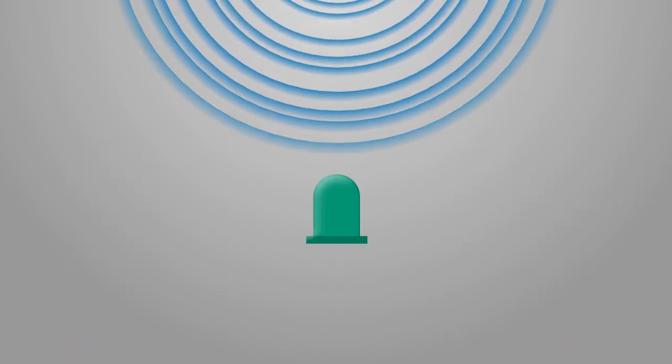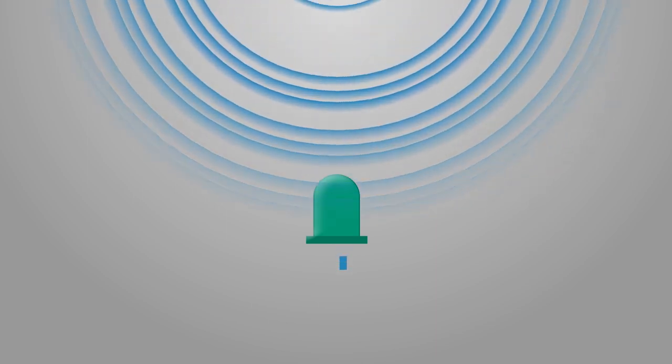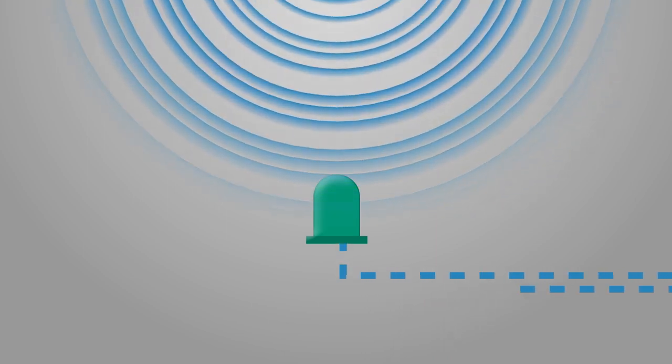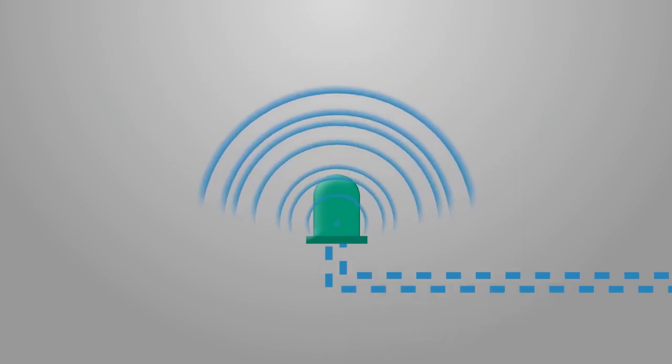A photodiode on the receiver device captures the light and converts the information into electrical impulses. This enables bidirectional data transmission.